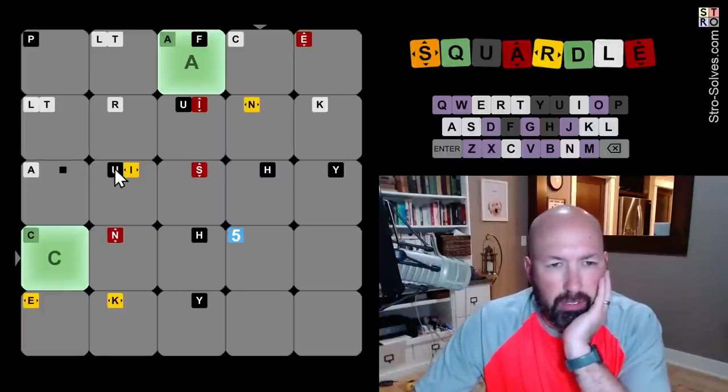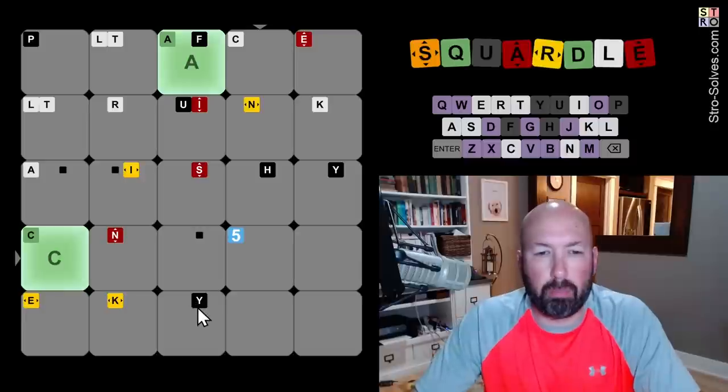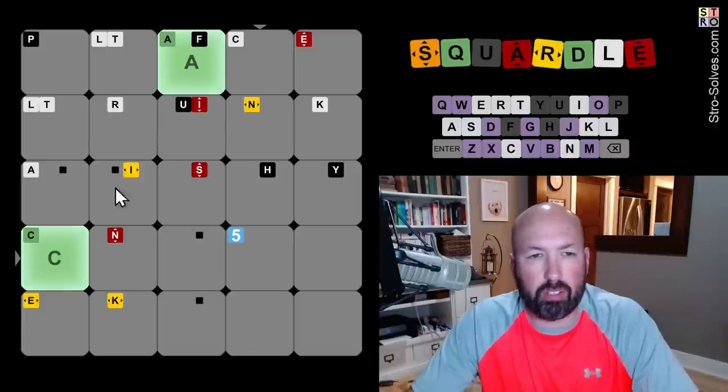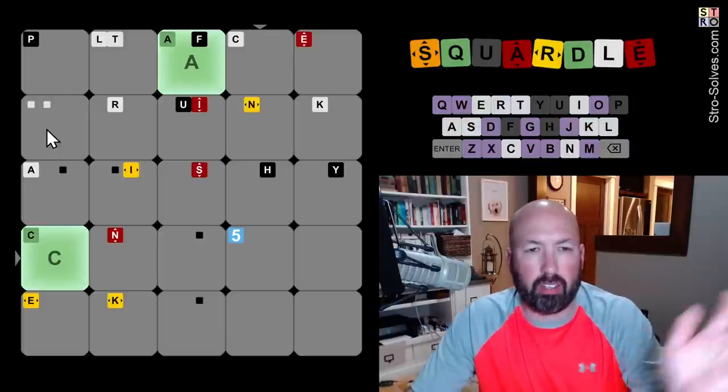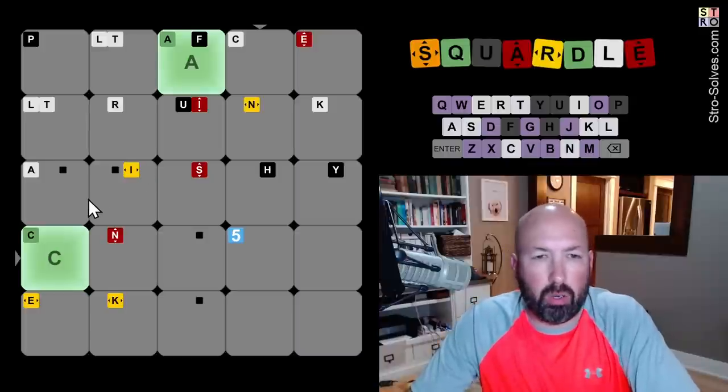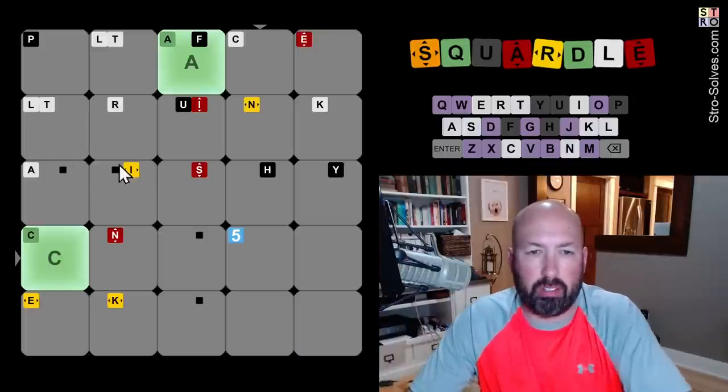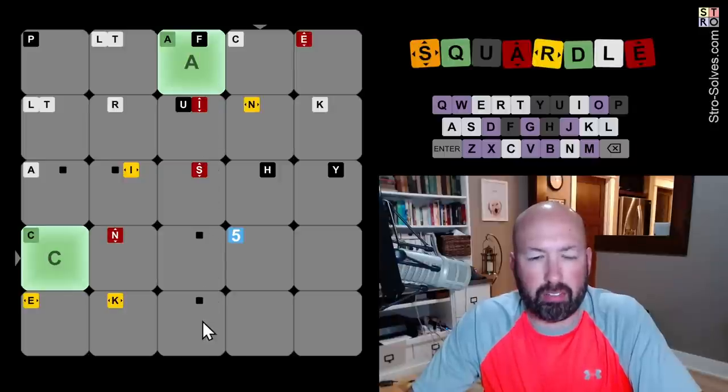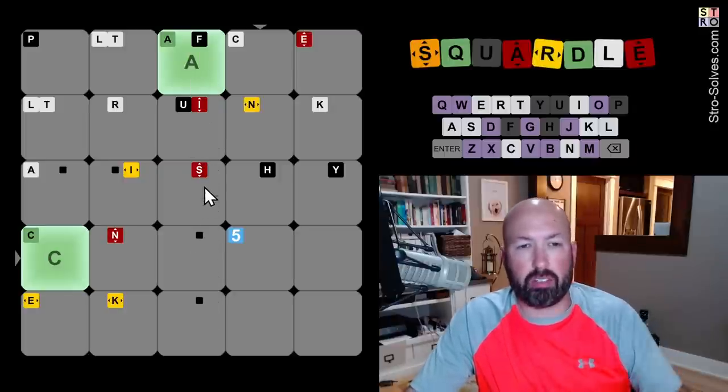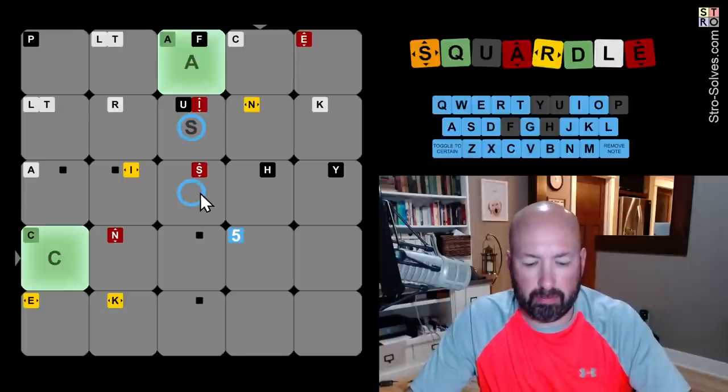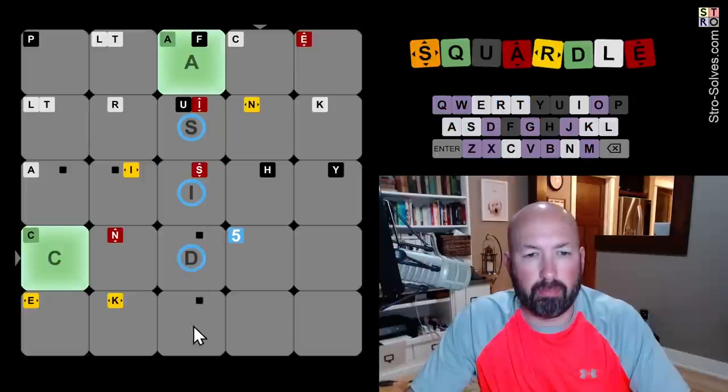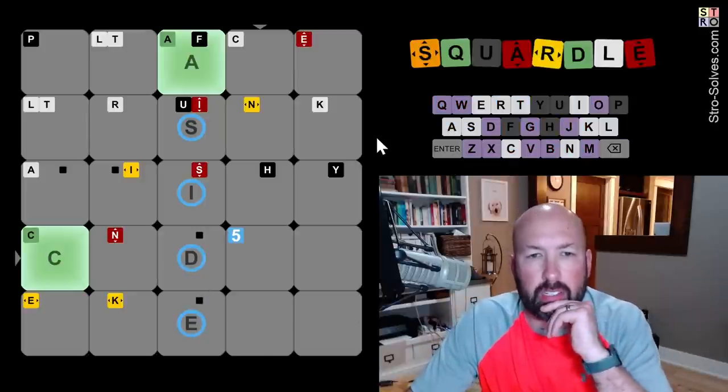So I'm gonna hide my duplicate black clues. I know there's a way in the settings to tell it to hide duplicates. I never remember to do that until I've already started. All right, so let's see, what do we want to do now? We've got I and S in here and an A. Okay, so could be something like aside.